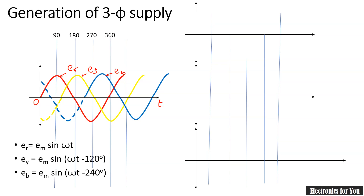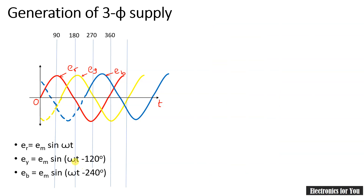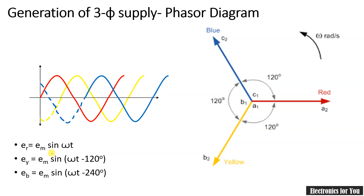Let us complete one more important concept: the phasor diagram for the supply. We can draw it using the EMF equations. Taking red as reference it is kept on the X-axis, indicating ER. EY is 120 degrees away and lagging, and since lag in a phasor diagram is indicated in the clockwise direction, EY is placed 120 degrees clockwise from ER. The last one, EB, is again 120 degrees away clockwise from EY.